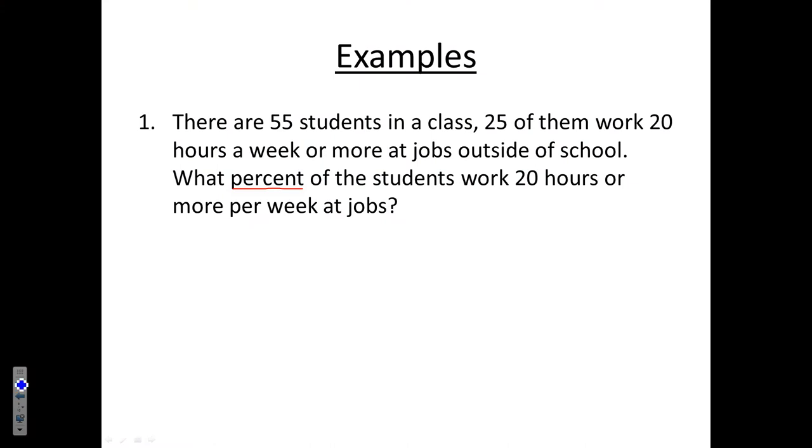So what do we know? We know that there are a total of 55 students in this class and we know that 25 of them are working 20 hours or more a week. So first we can set up just a fraction to represent this or a ratio. So 25 out of 55 students are working 20 hours a week or more out of 55 students that are the total number of students in the class.